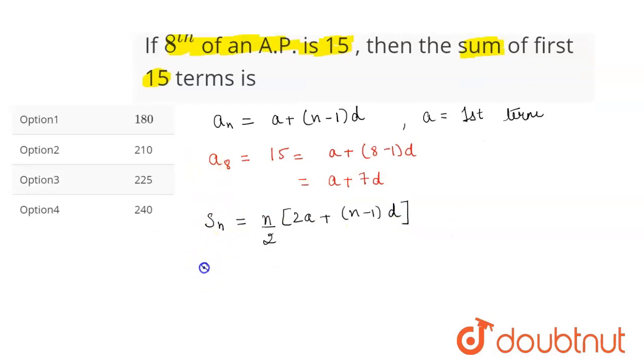Here we are to find the sum of 15 terms. So S of 15 will be equal to 15 by 2 into [2a plus 15 minus 1 is 14 into d]. This will be equal to,